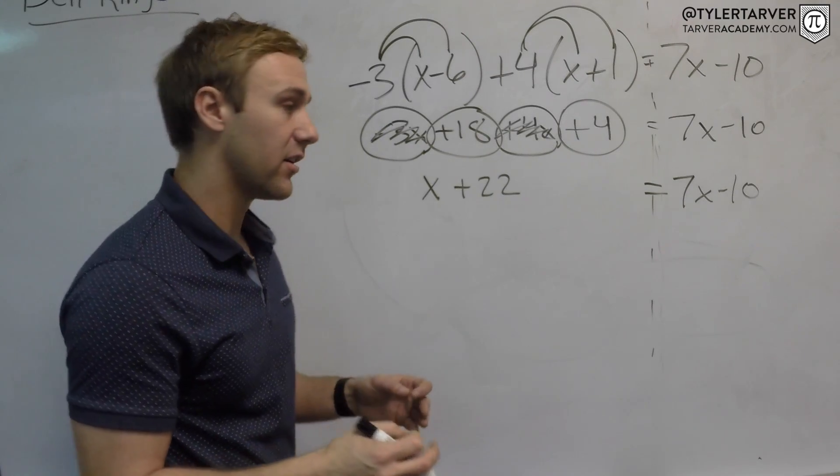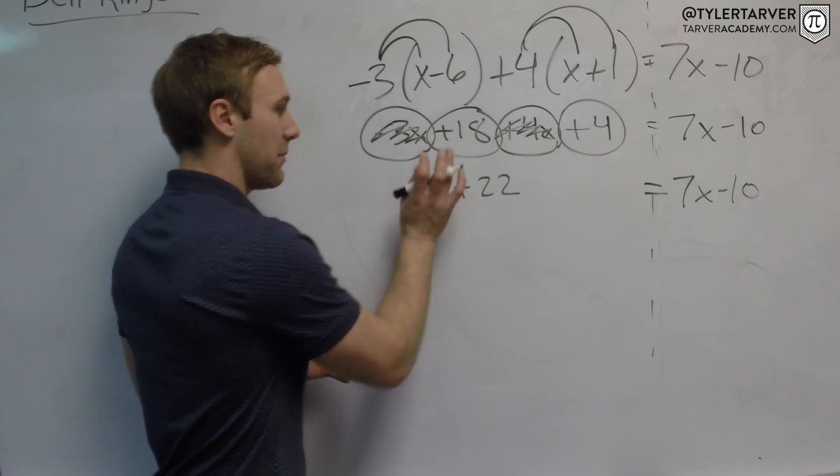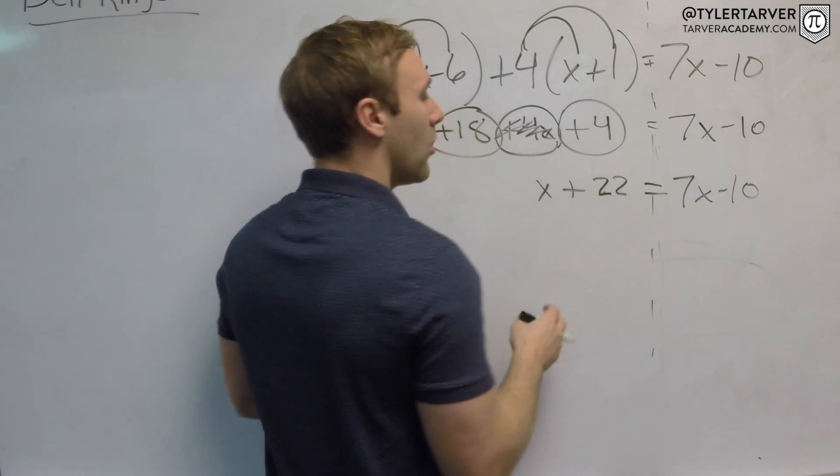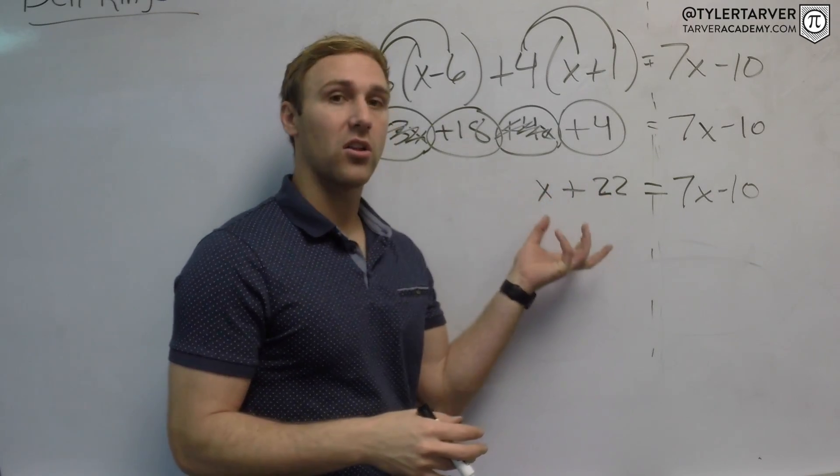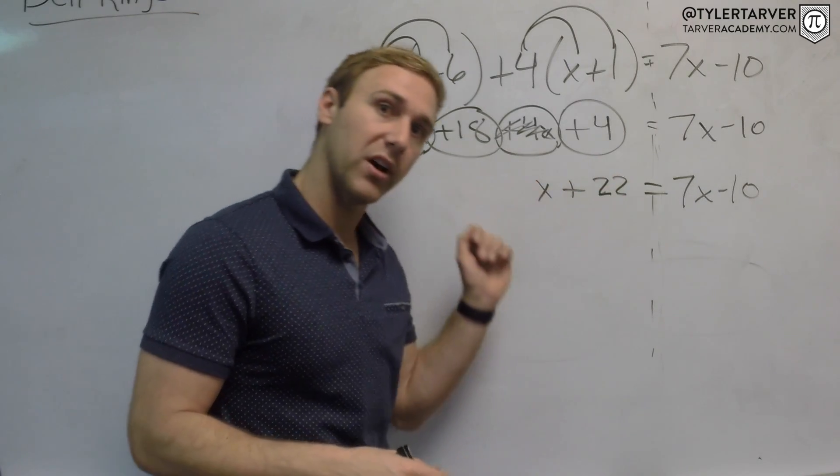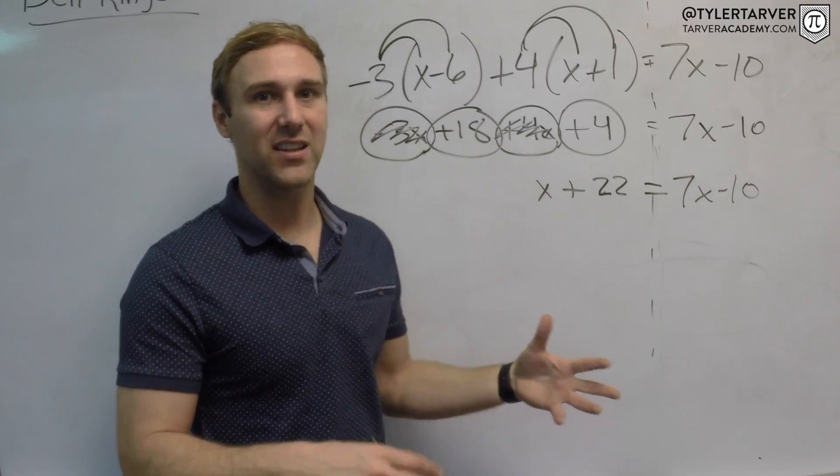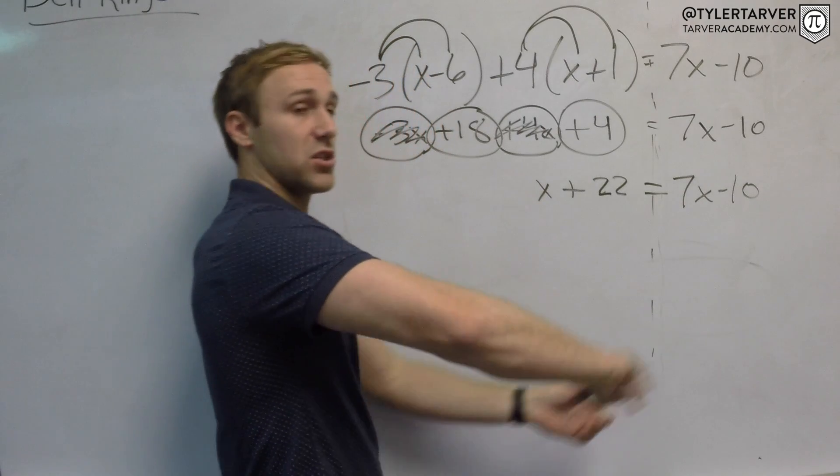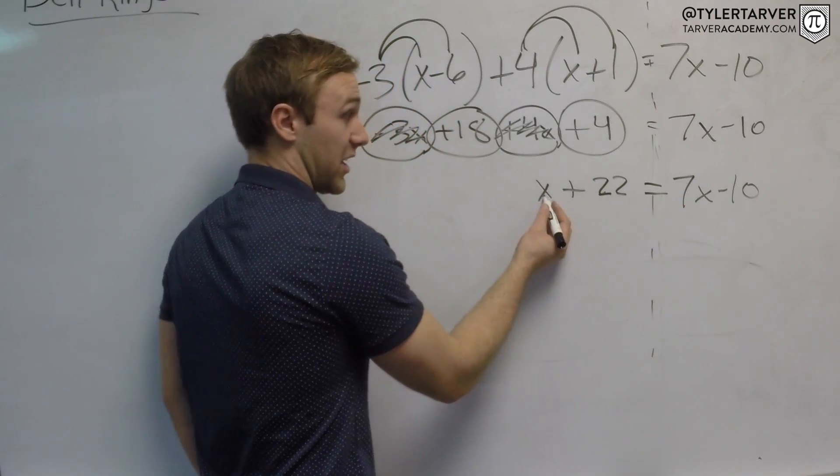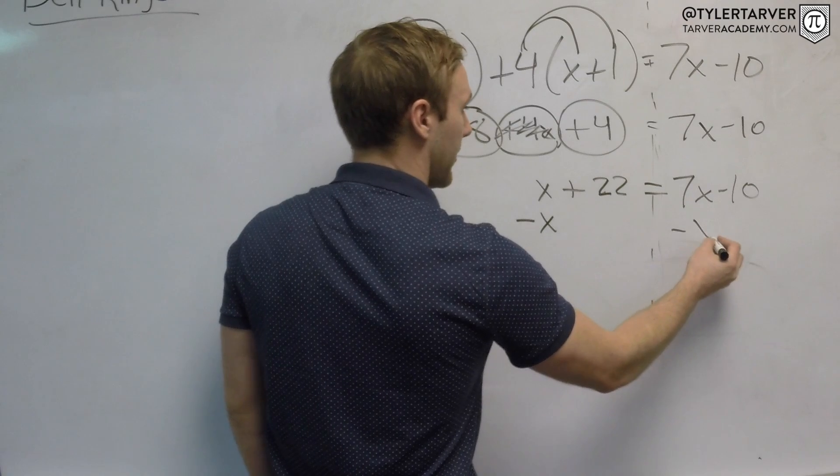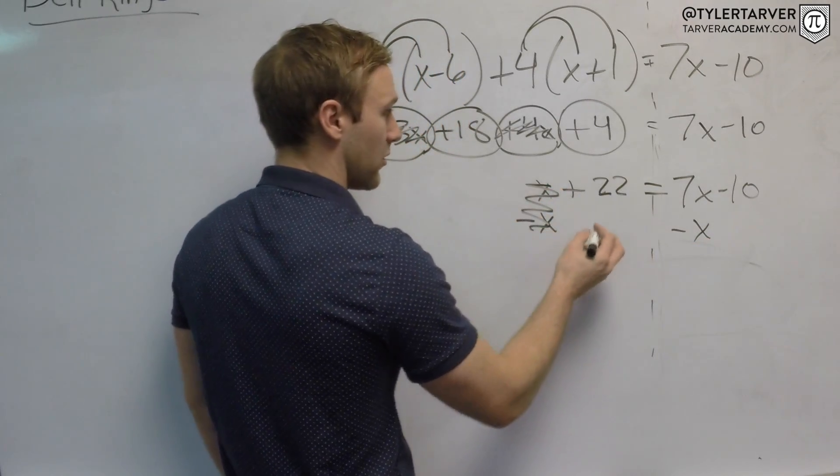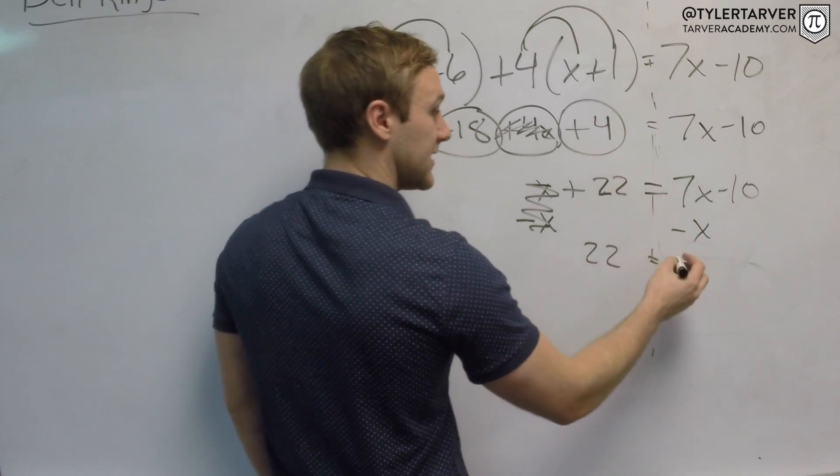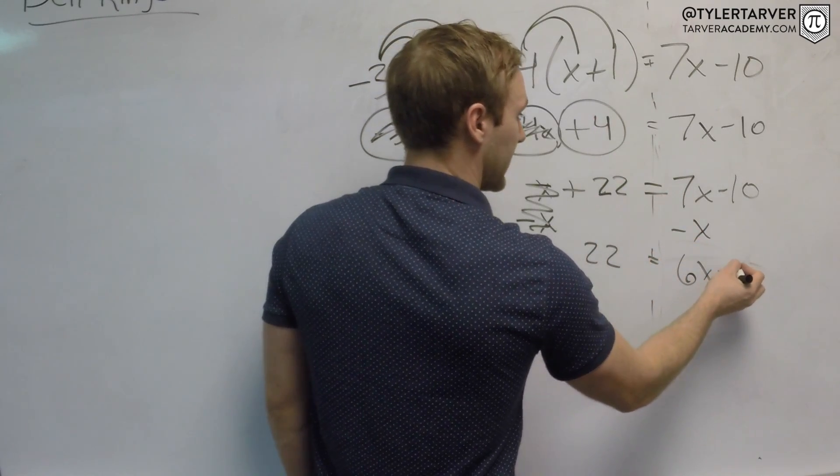Now we've still got to get our x's together. What I always recommend is whatever the smaller number with the variable is, put it on the other side. That way you're not making it a negative and then just adds confusion to it. So this x is smaller than this x. So I'm going to move it to the other side. So to get rid of an x, I would just subtract x from both sides. That goes away. That's 22. 7x minus 1x is 6x. And I've still got that negative 10 hanging out.